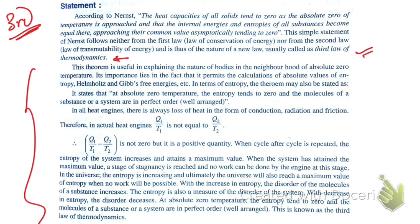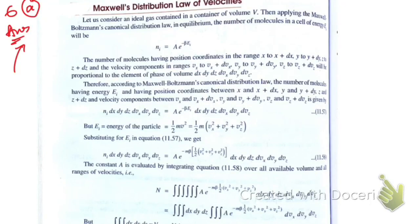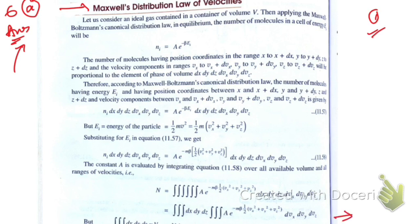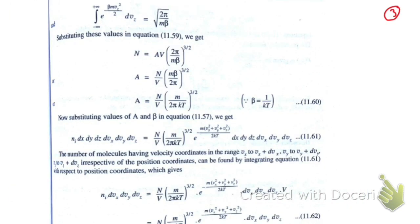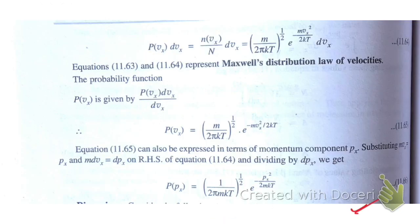Question 6a: write the expression for Maxwell's velocity distribution function and from it determine the most probable speed. Here is the answer to 6a across multiple slides — first, second, third, and a last page where the derivation is completed. Take a screenshot or copy it down.